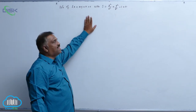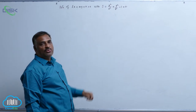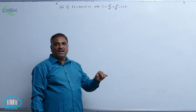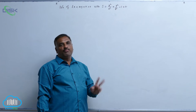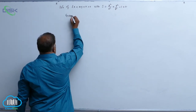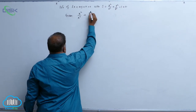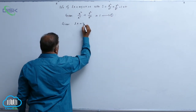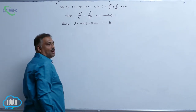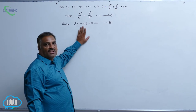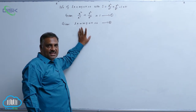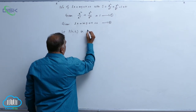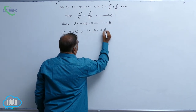Let us consider the pole of Lx + My + N = 0 with respect to x²/a² + y²/b² = 1. We know that every polar corresponds to one pole and every pole will have one polar. The given ellipse is x²/a² + y²/b² = 1, equation 1. The given line is Lx + My + N = 0, this is equation 2. We require to find the pole of this line. Since the polar of some point is this line, let P(x₁, y₁) be the pole of equation 2 with respect to equation 1.